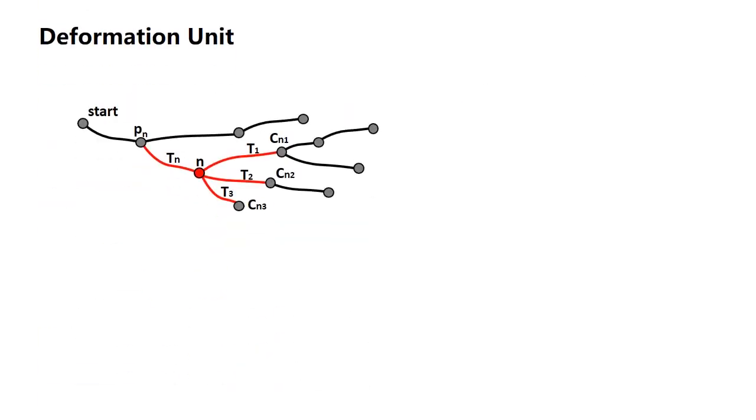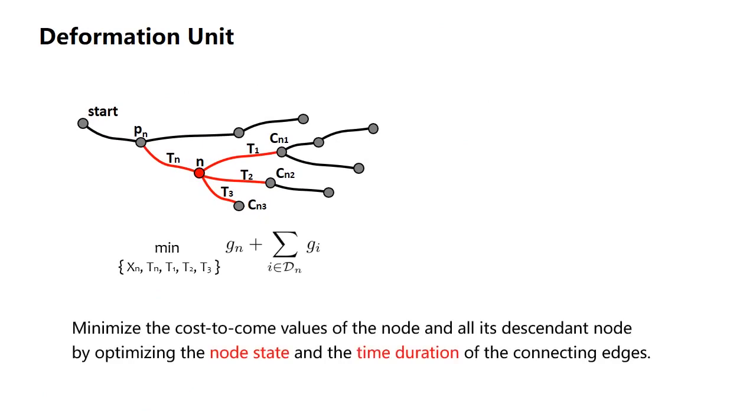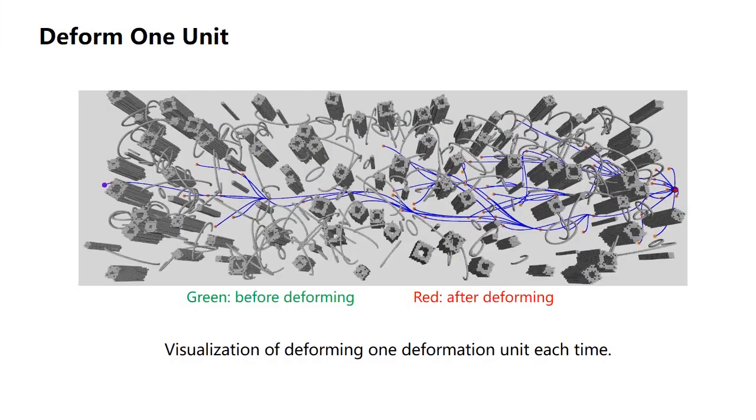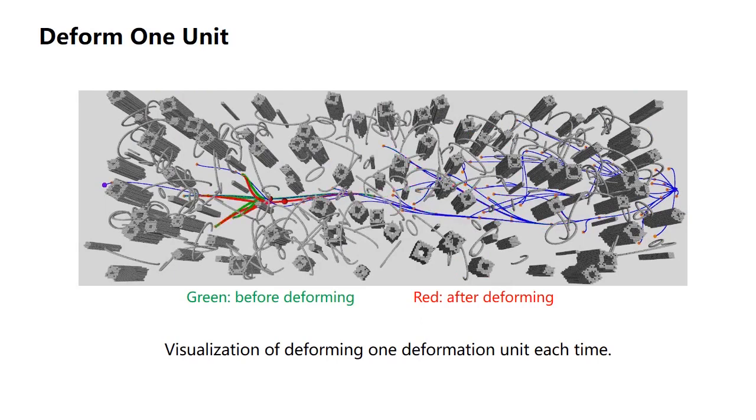We propose to deform in forms of deformation units. Each unit consists of one node and all the edges connecting it. We minimize the cost-to-come values of the node and all its descendant node by optimizing only the node state and the time duration of the connecting edges. Here is the visualization of deforming one deformation unit each time in the process of tree growing. The deforming produces a smoother tree without adding more samples.